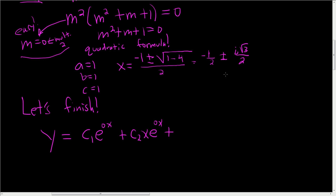Now here we have complex conjugate solutions. So we have c sub 3 e to the negative 1 half x cosine of square root of 3 over 2x, plus c sub 4 e to the negative 1 half x sine of square root of 3 over 2x.